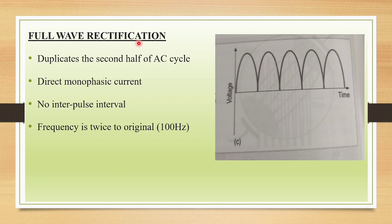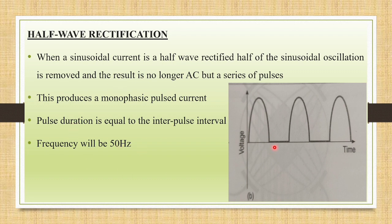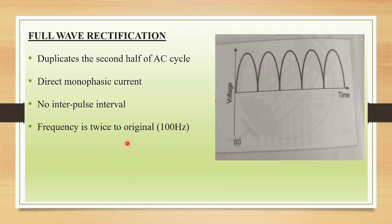In full wave rectification, it duplicates the second half of the AC cycle. This is known as direct monophasic current. There will be no interpulse interval between the pulse periods, and the frequency is twice the original. So in half wave rectification the frequency is 50 Hz because of the presence of interpulse interval. In full wave rectification, since there is no interpulse interval, the frequency is twice normal — that is 50 into 2, which is 100 Hz.